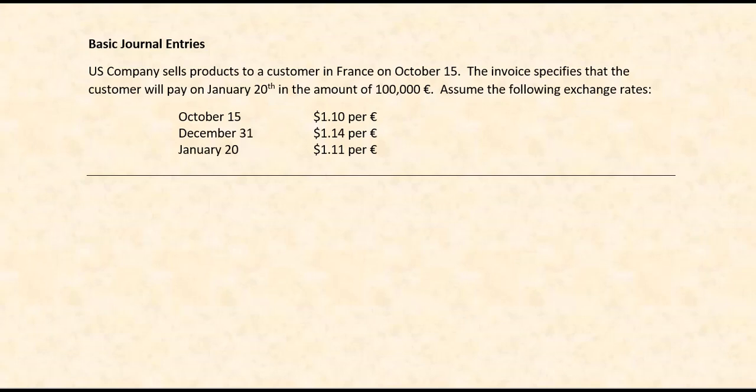In this video, I'm going to review the basic journal entries a U.S. company would make if it were to sell a product to a foreign company and allow that customer to pay in a foreign currency. This will be a simple example that does not involve any type of hedging for foreign exchange risk.